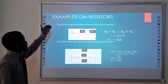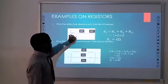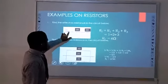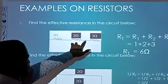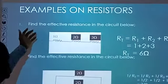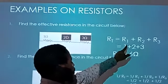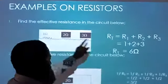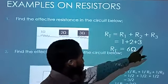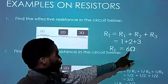Now let's look at example 1 on resistors. We have three resistors in a circuit arranged in series — you can see they are connected by a single conductor. We are asked to find the effective resistance. Applying the formula: RT equals R1 plus R2 plus R3. R1 is 1 ohm, R2 is 2 ohms, and R3 is 3 ohms. Adding them together, the total effective resistance RT equals 6 ohms.